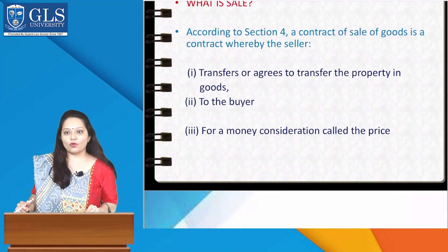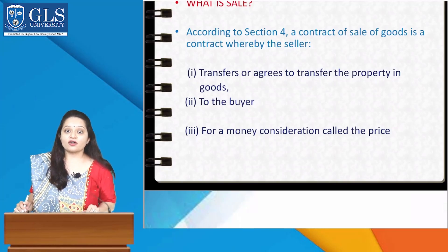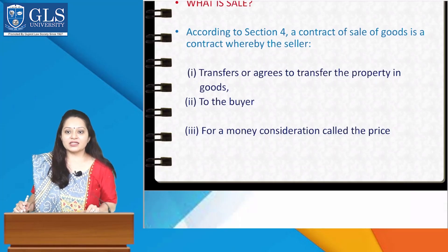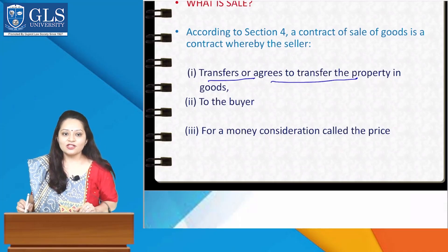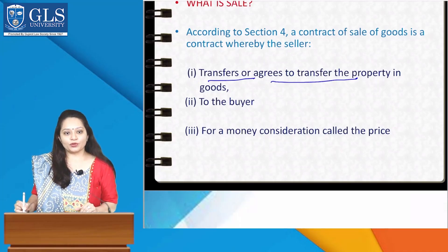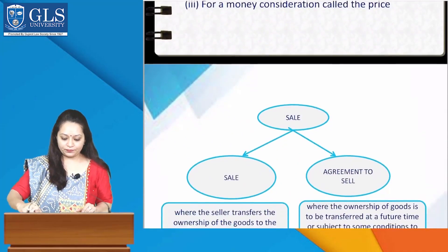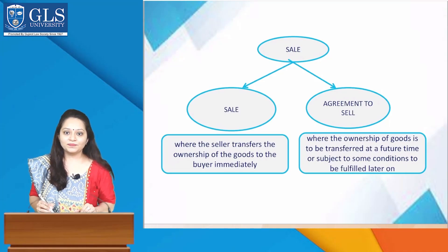According to Section 4, a contract of sale of goods is a contract whereby the seller transfers or agrees to transfer the property in goods to the buyer for a money consideration called the price. If you observe here, it includes 'transfers or agrees to transfer' — both present and future. So can we say that sale includes both sale as well as agreement to sale? Yes.